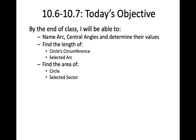By the end of class today you'll be able to do three things. First, to name arcs and central angles and determine their values. Secondly, you'll be able to find the lengths of two different things: the whole circle's circumference and part of the circle's circumference, which is called an arc. Thirdly, you'll be able to find the area of two things: the whole circle and part of the circle, called a sector.